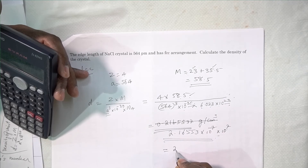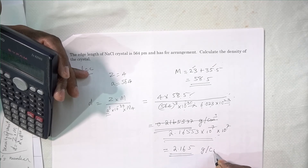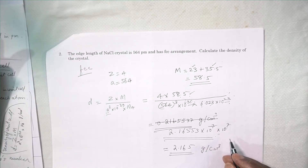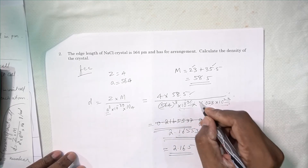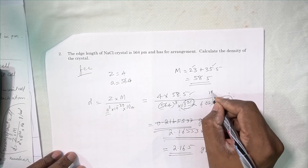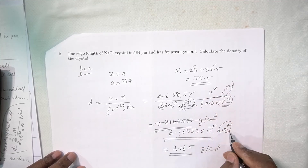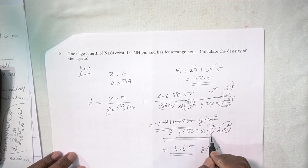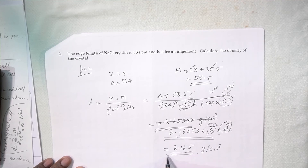This equals 2.165 grams per centimeter cube. The 10 to the power minus 7 from the calculation and the 10 to the power 7 from the power difference cancel each other out, giving a final density of 2.165 grams per centimeter cube.